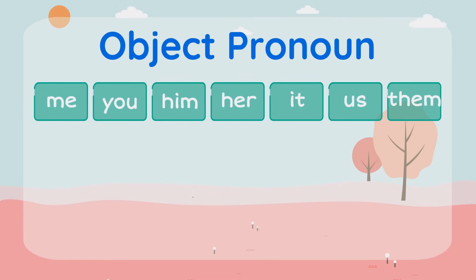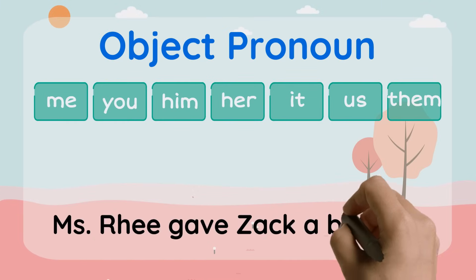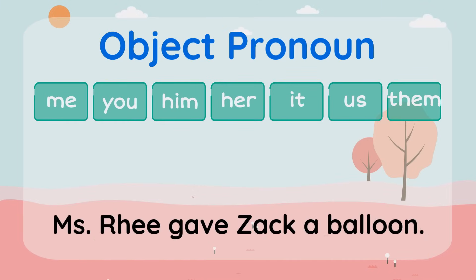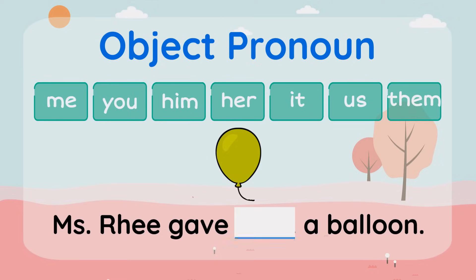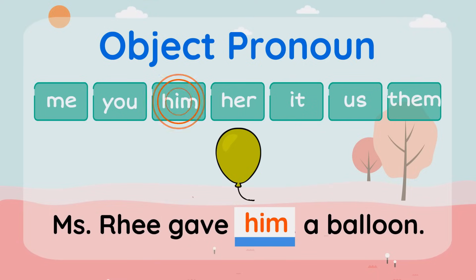An object pronoun is the receiver of the action. Ms. Rhee gave Zach a balloon. Who is the receiver of the action? Zach is. So let's go ahead and replace Zach with one of the object pronouns. Zach is a boy, so it's him. Ms. Rhee gave him a balloon.